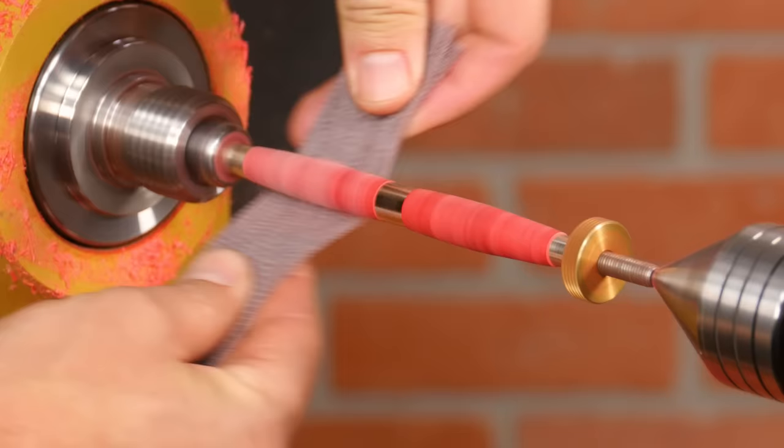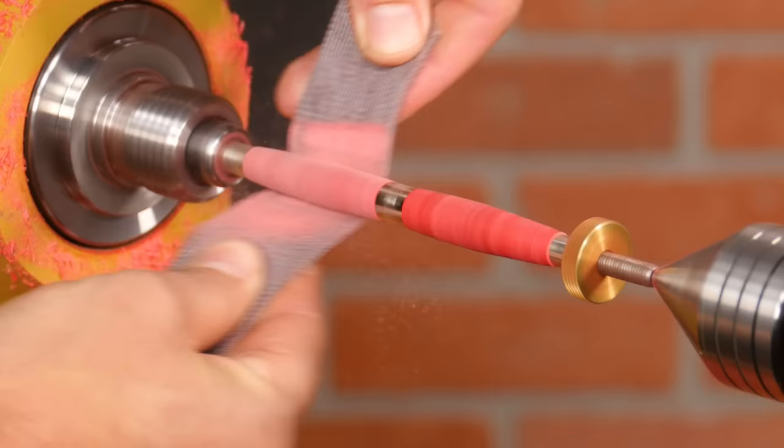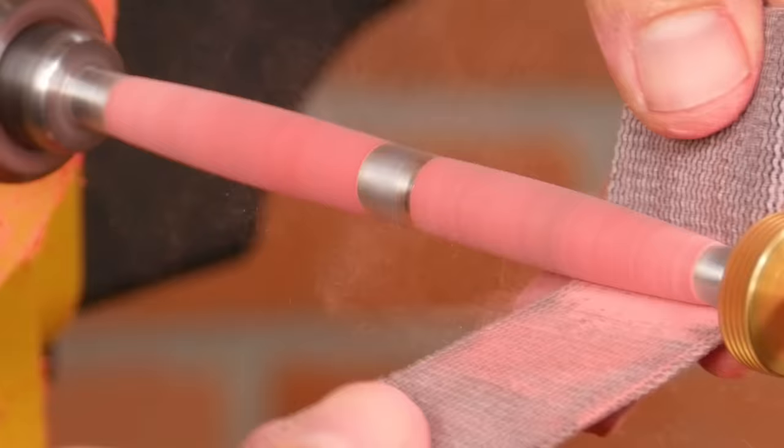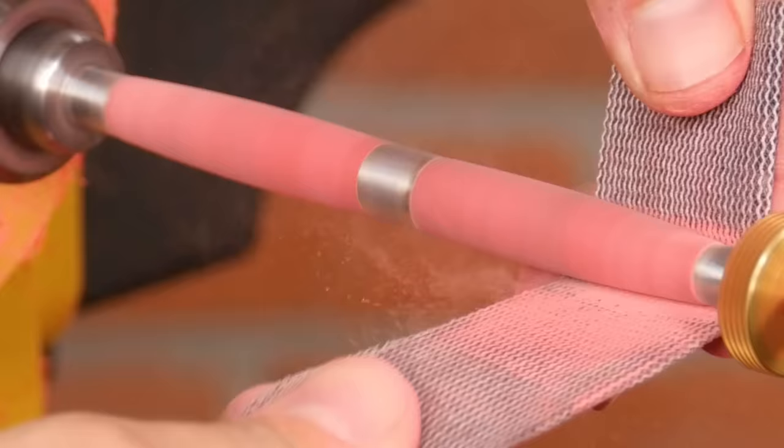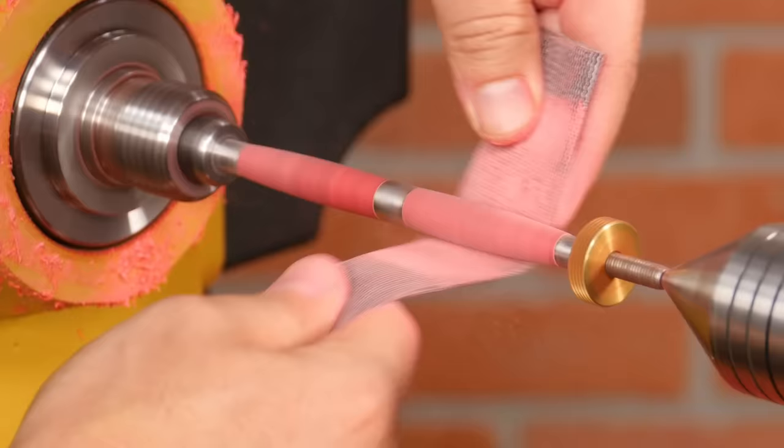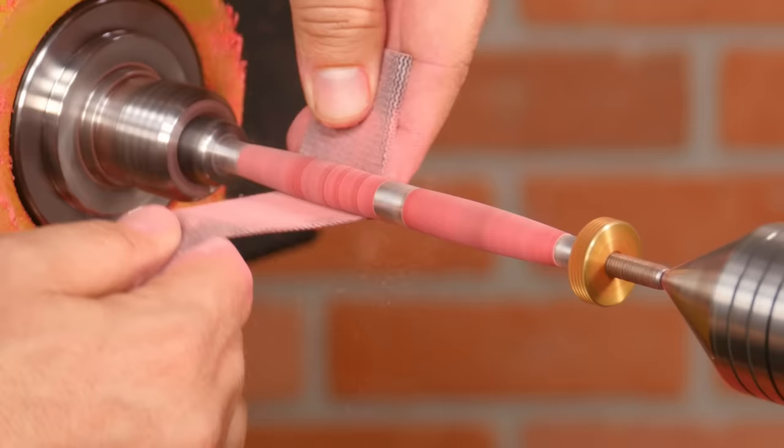Sand with light pressure, moving the paper back and forth constantly across the blanks. Spend more time on the coarser grits as they'll even out the turning, and the finer grits will polish the blanks.